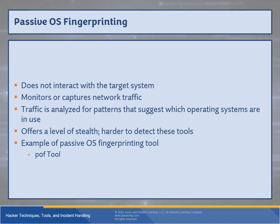With passive OS fingerprinting, we just monitor traffic and look for patterns — significant stealth as opposed to active connectivity. The p0f tool is a good example of a passive fingerprinting tool. Wireshark can also be used in certain cases to figure out information, depending on what level of scan intensity you're looking for. I strongly recommend going to nmap.org to look at the manual and see all the different customization options, then get into the scripting engine.